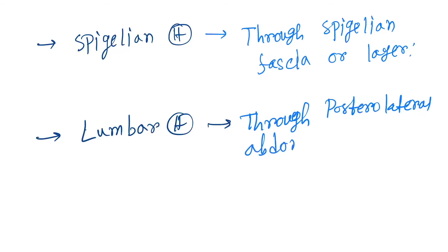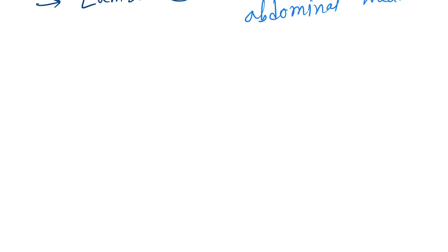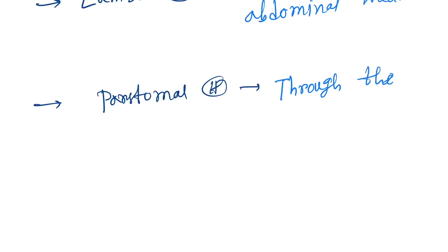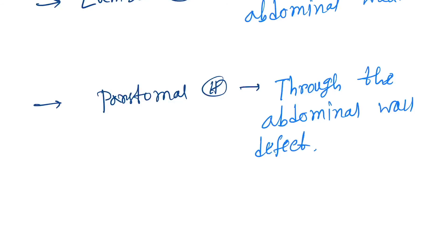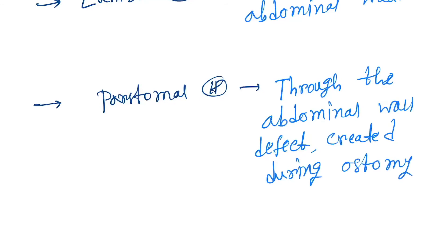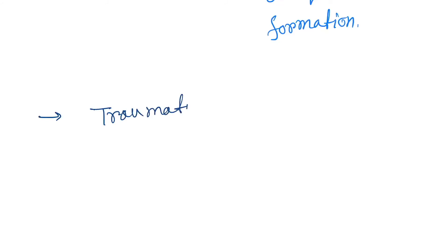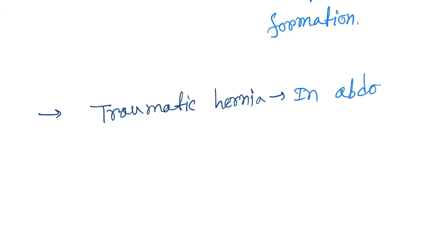Next is the parastomal hernia, where organ or tissue comes through an abdominal wall defect created during ostomy formation. The last ventral hernia is the traumatic hernia, which occurs in the abdomen due to blunt trauma.